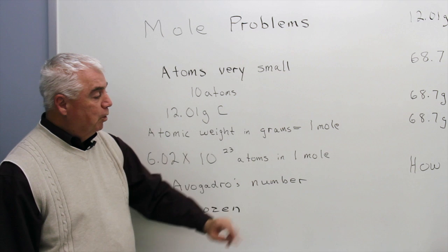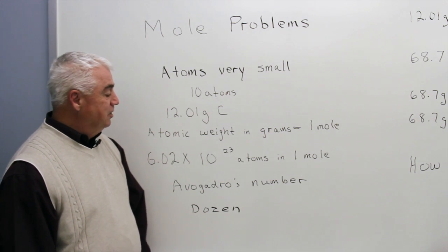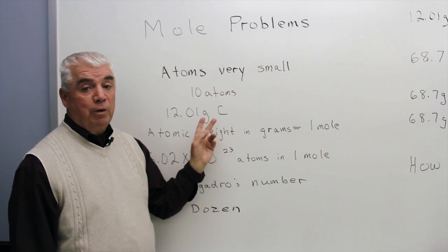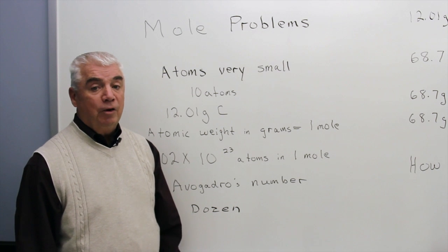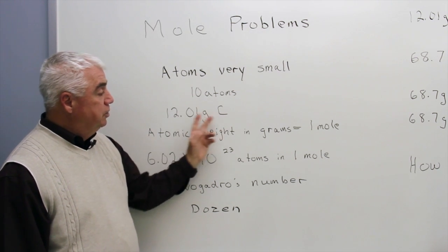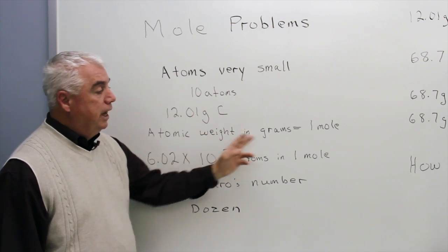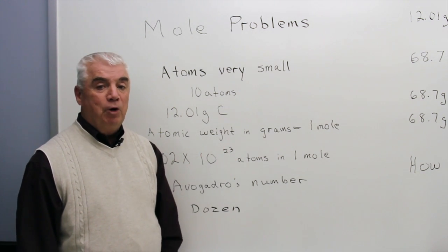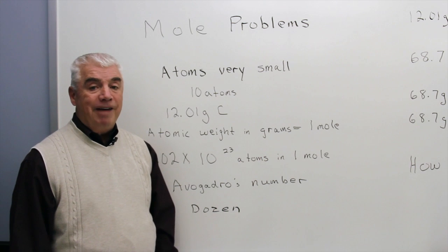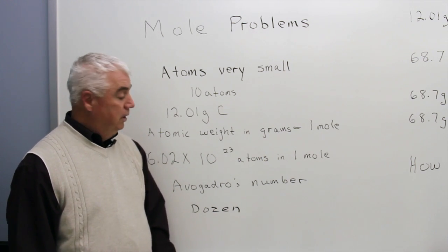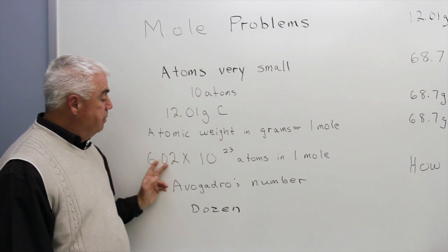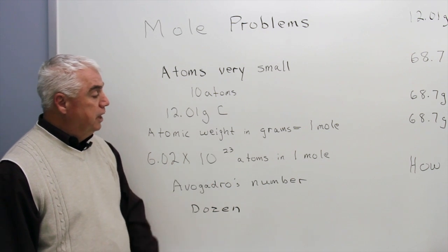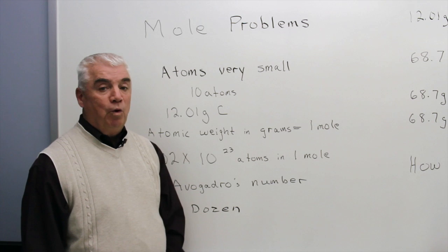Mole is sort of a funny word. And that's true not only of carbon, but of any of the elements. If we were to take oxygen or silicon or sulfur and use its atomic weight in grams, we'd have one mole of that material. A scientist by the name of Avogadro came along and said he was going to determine the number of atoms in a mole. He successfully did so and came up with this number — 6.02 times 10 to the 23rd atoms in one mole.